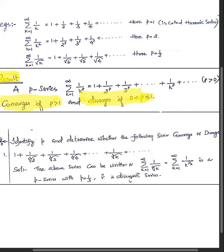Now, identify p and determine whether the following series are convergent or divergent. First example: 1 + 1/∛2 + 1/∛3 + ... This can be written as summation from k=1 to infinity of 1/k^(1/3), which is a p-series with p = 1/3. Since p = 1/3 < 1, the series is divergent.